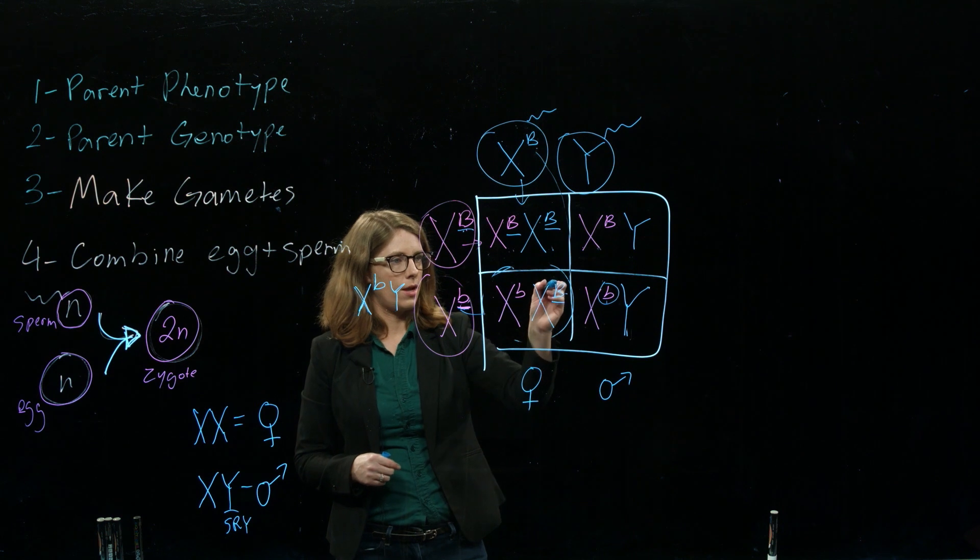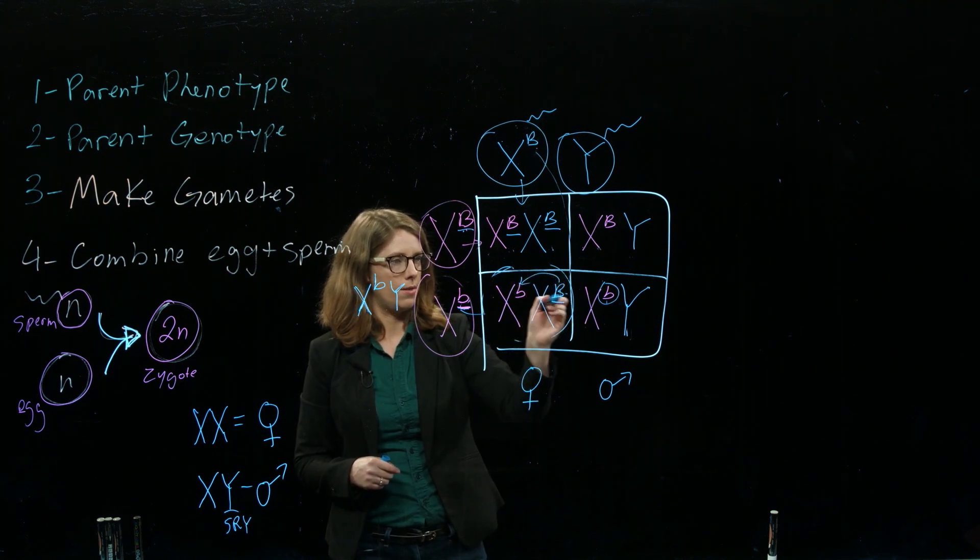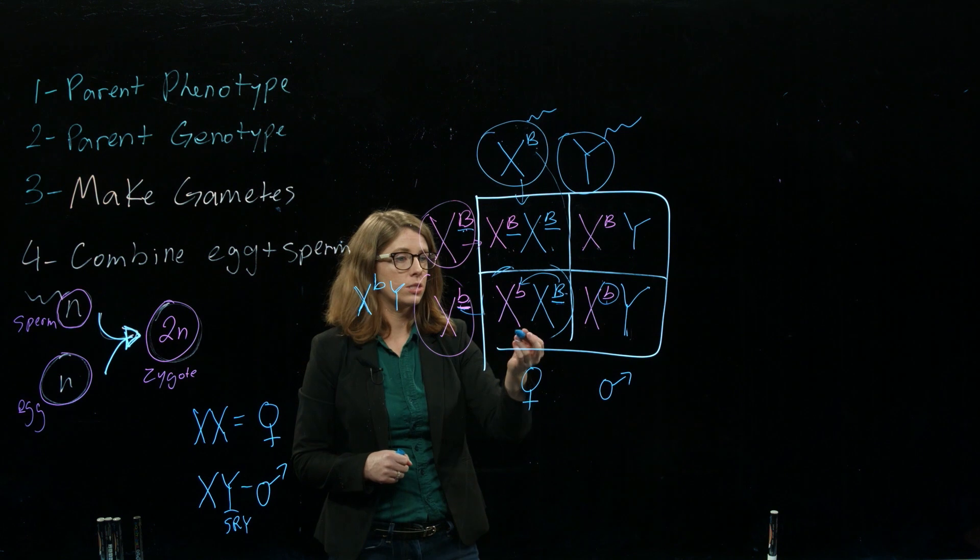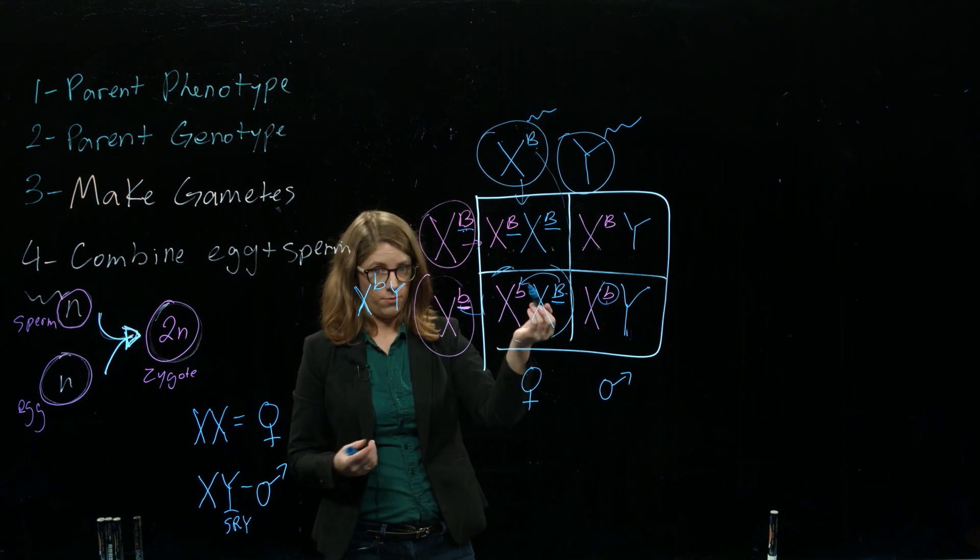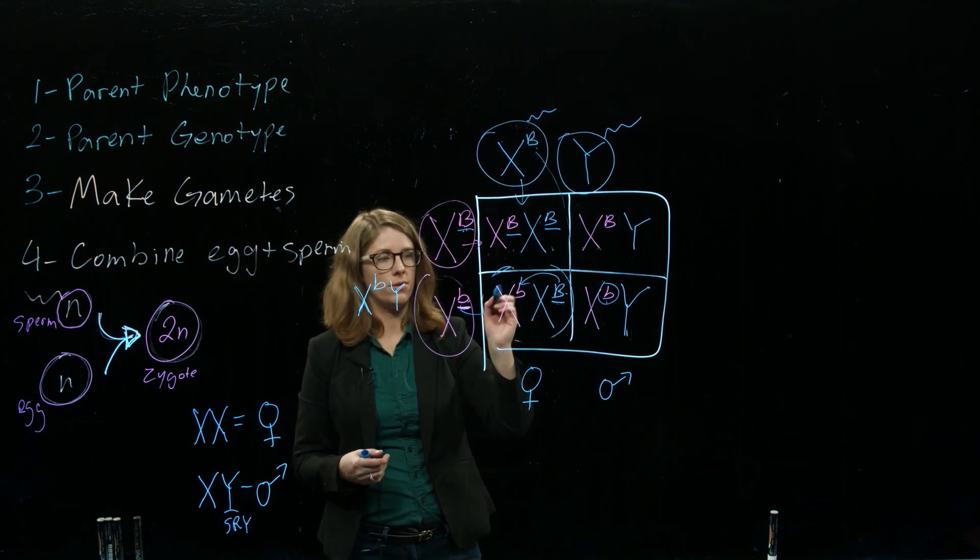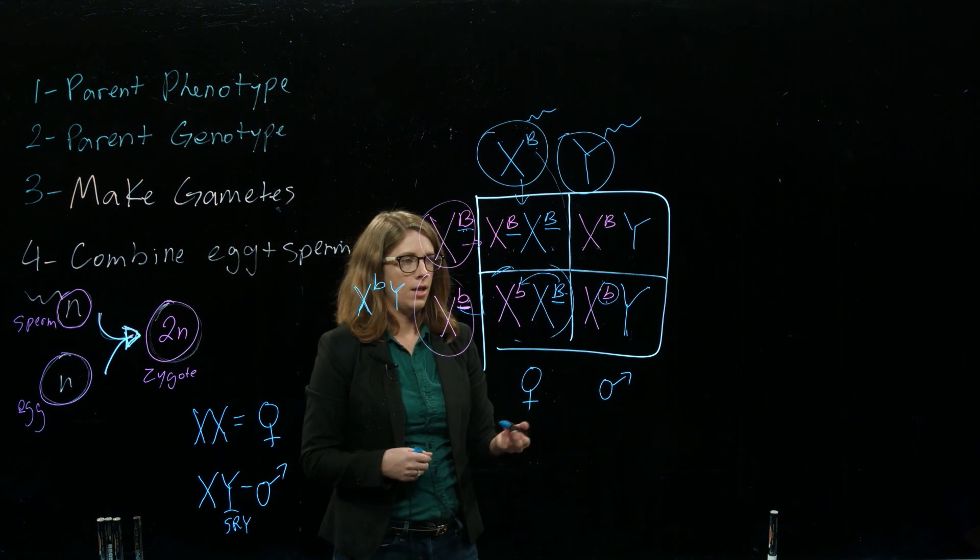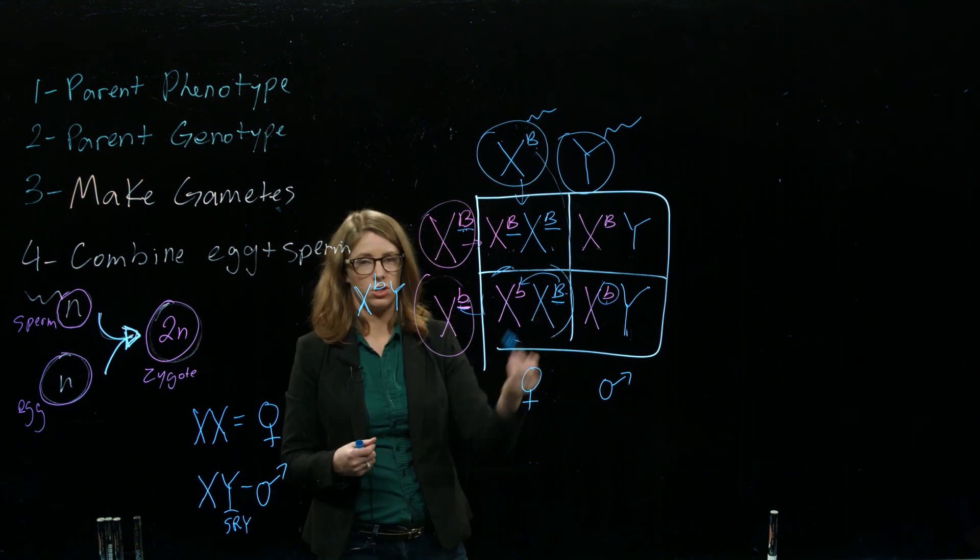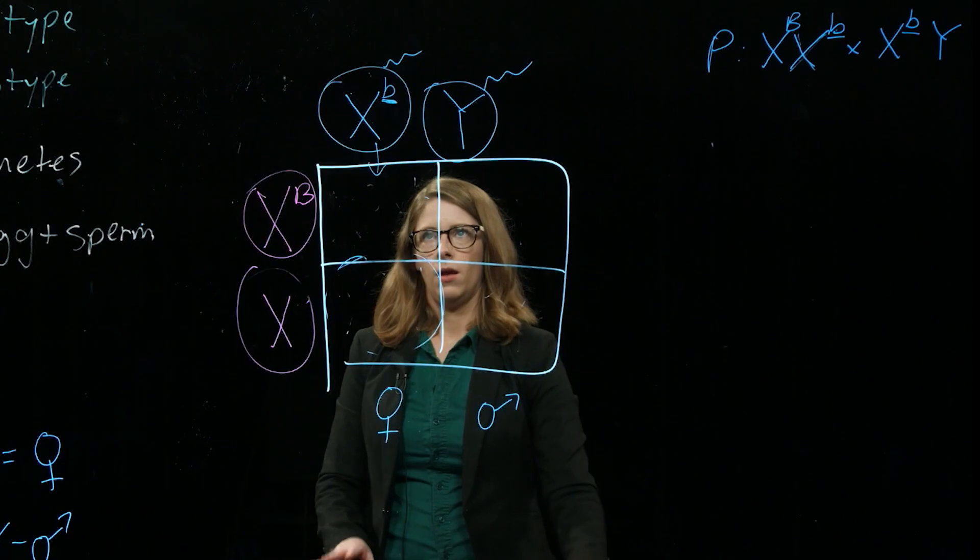Whereas females are kind of protected by that dominant allele. So it is possible if you had two Xs and they both had a recessive allele for a female to be colorblind, it's just not as common because you have twice the chances of getting a dominant allele.